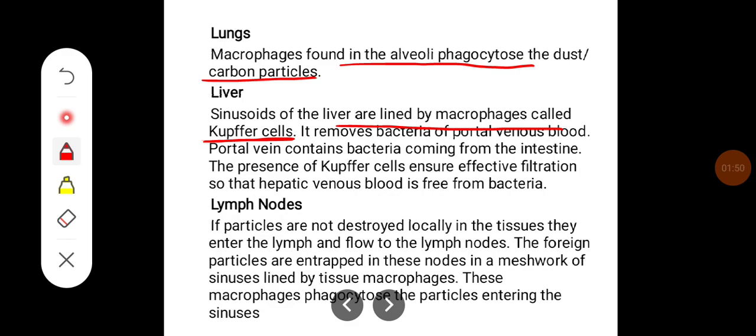The kupfer cells remove bacteria from the portal venous blood. Portal venous blood contains bacteria coming from the intestine. The presence of kupfer cells ensures effective filtration so that the hepatic venous blood is free from bacteria.